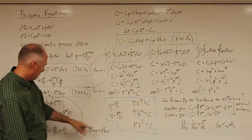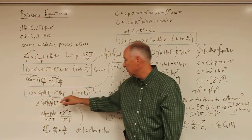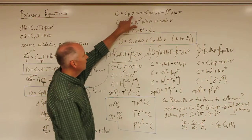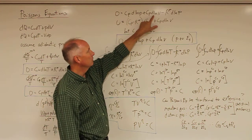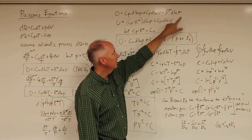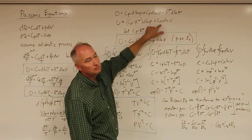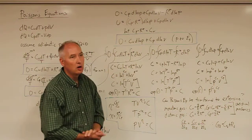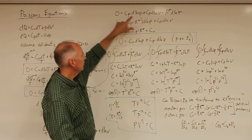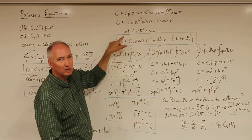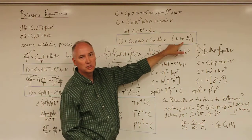We can take that d log T and input it into the T and P equation. You have c_p times the derivative of the natural log of P plus c_p times the derivative of the natural log of V minus R* d log P. Then you can combine terms: c_p minus R* times d log P plus c_p d log V. Recalling that c_p minus R* is equal to c_v, we substitute in and end up with zero equals c_v d log P plus c_p d log V. This is our pressure and volume equation.